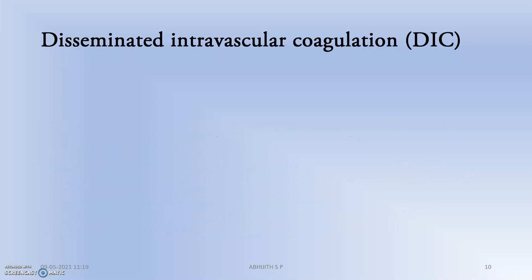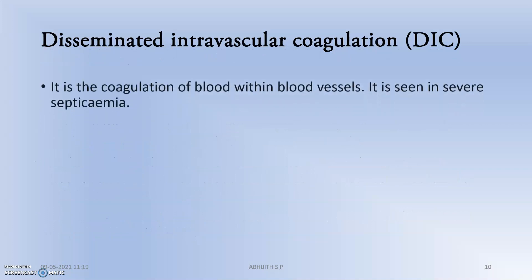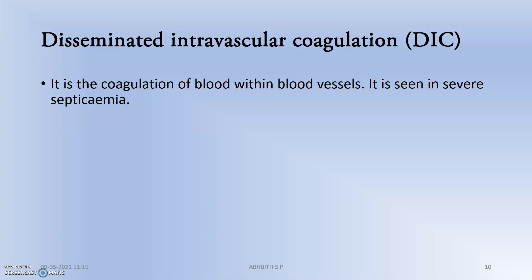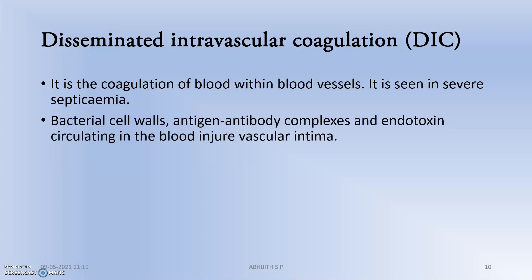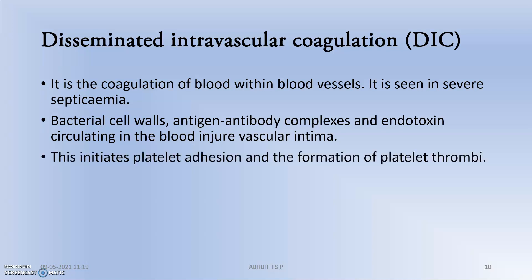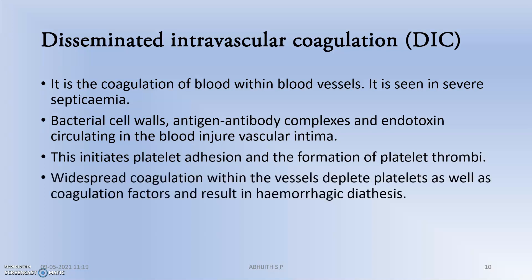Moving to disseminated intravascular coagulation (DIC): it is the coagulation of blood within blood vessels and is seen in severe septicemia and many viral diseases. Bacterial cell walls, antigen-antibody complexes, and endotoxins circulating in the blood injure the vascular intima, initiating platelet aggregation and formation of platelet thrombi. Widespread coagulation within the vessels depletes platelets as well as coagulation factors, resulting in hemorrhagic diathesis.